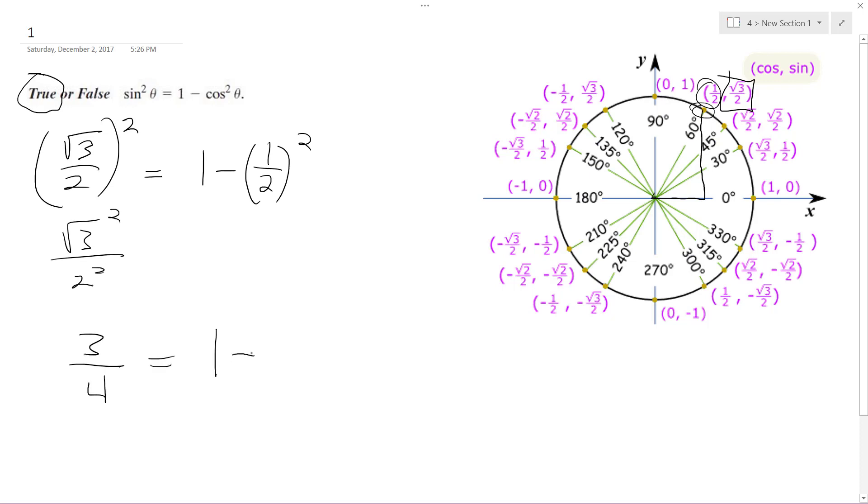And over here we got one minus one, one squared over two squared, which is one over four.